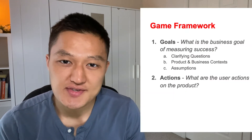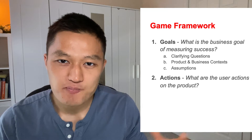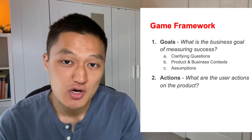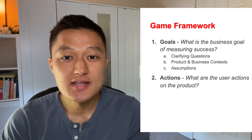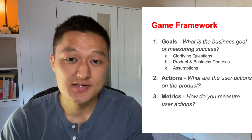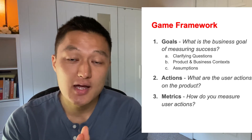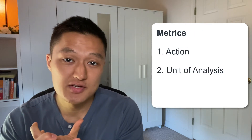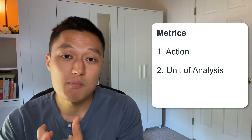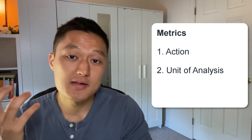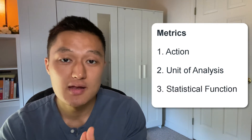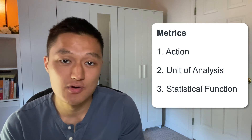The next step of the GAME framework is to define the actions. Think about it from the perspective of a user — what are the primary actions a user goes through when they enter a product or service? Once you have the actions, you turn them into quantifiable metrics. When designing a metric, you need three ingredients: pick out the action you want to measure, define your unit of analysis (such as per user or per month), and pick your aggregation function — average, median, min, max, and so forth.